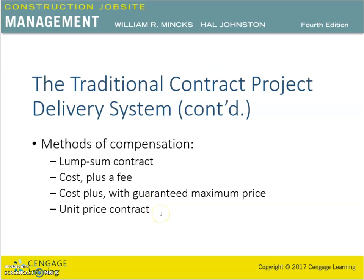The last method is the unit price contract. In this method, quantities are listed for the components of the project, which are priced per unit by the contractor. The total of each quantity multiplied by the unit price is added to determine the overall bid price. Payment is based on the completion of quantities for each line item. Unit price contracts are not common in building construction but are quite common in civil engineering projects such as road and bridge construction — horizontal or linear projects.